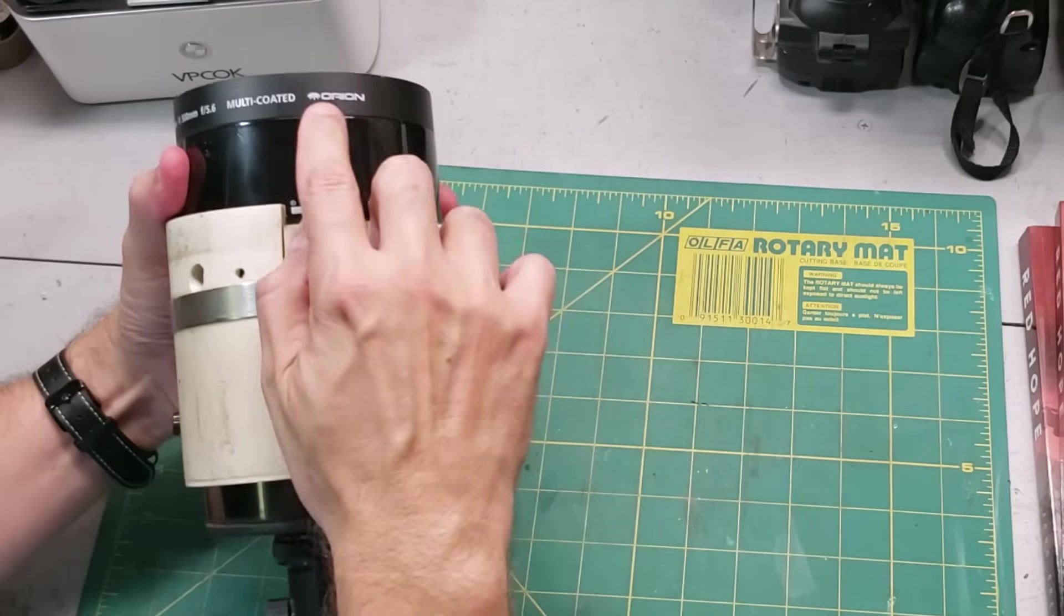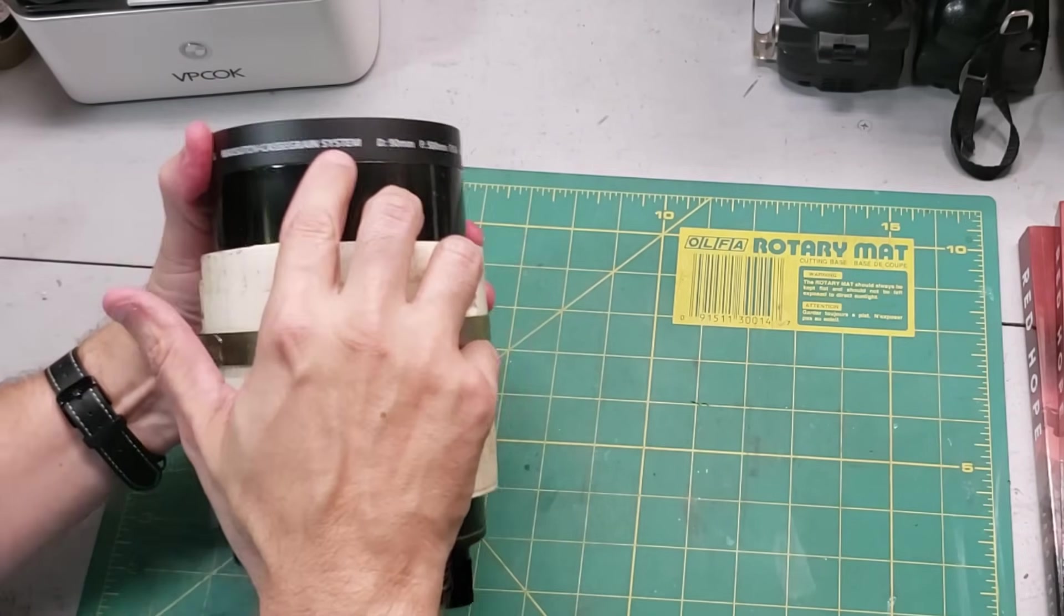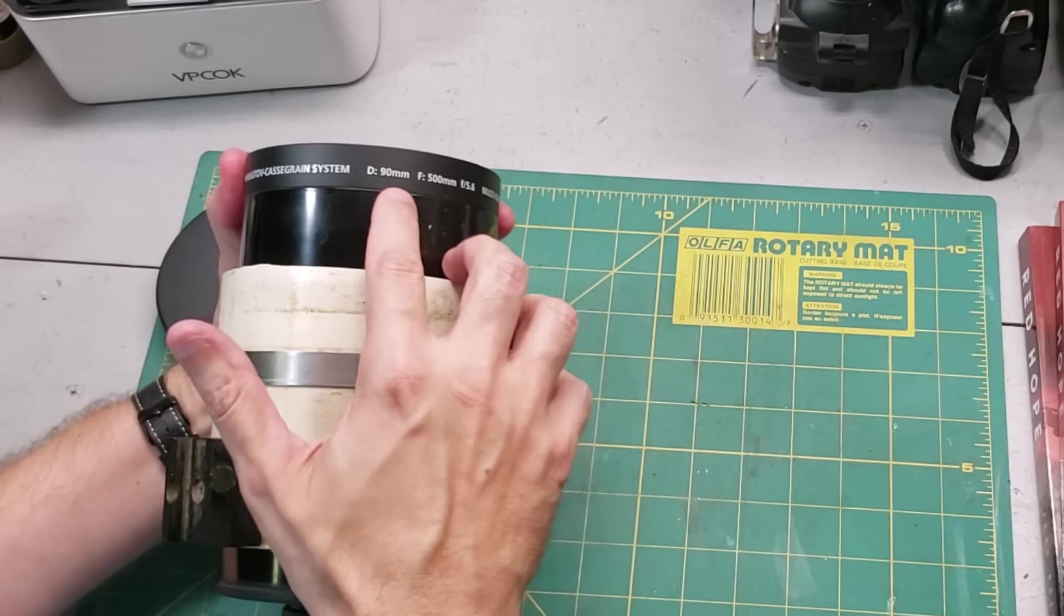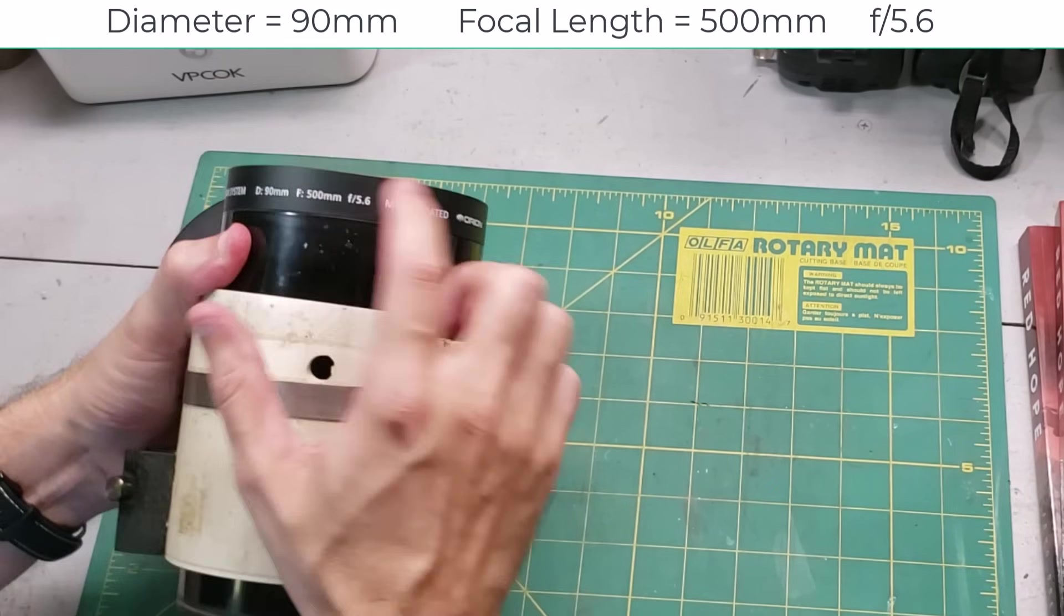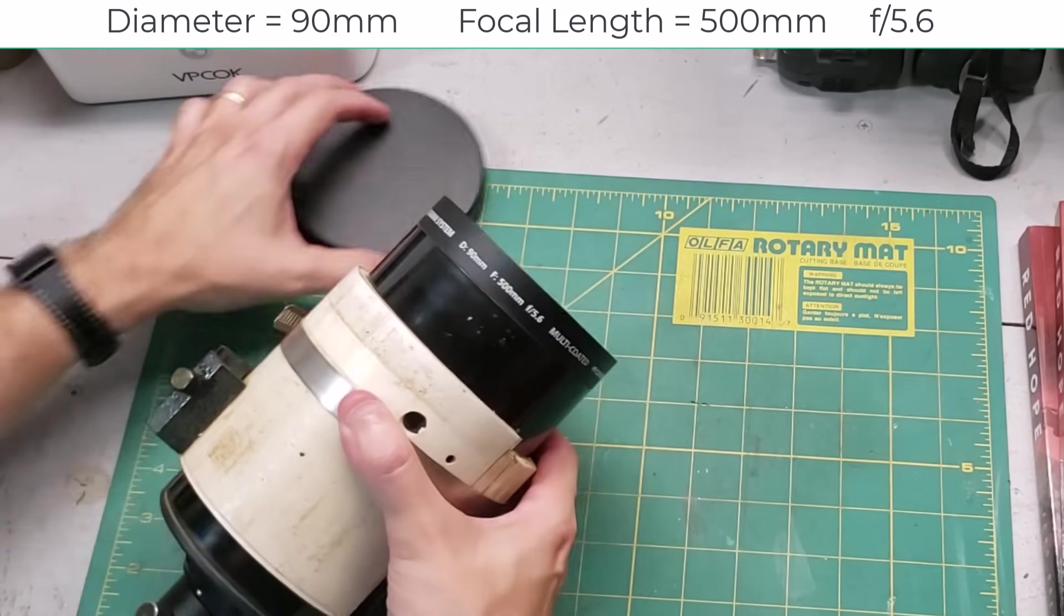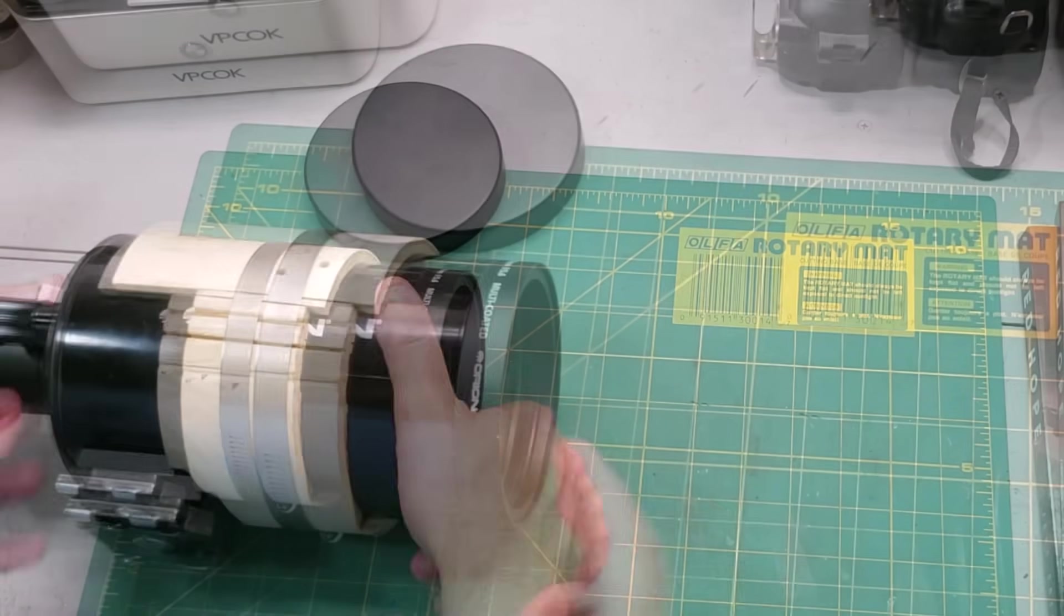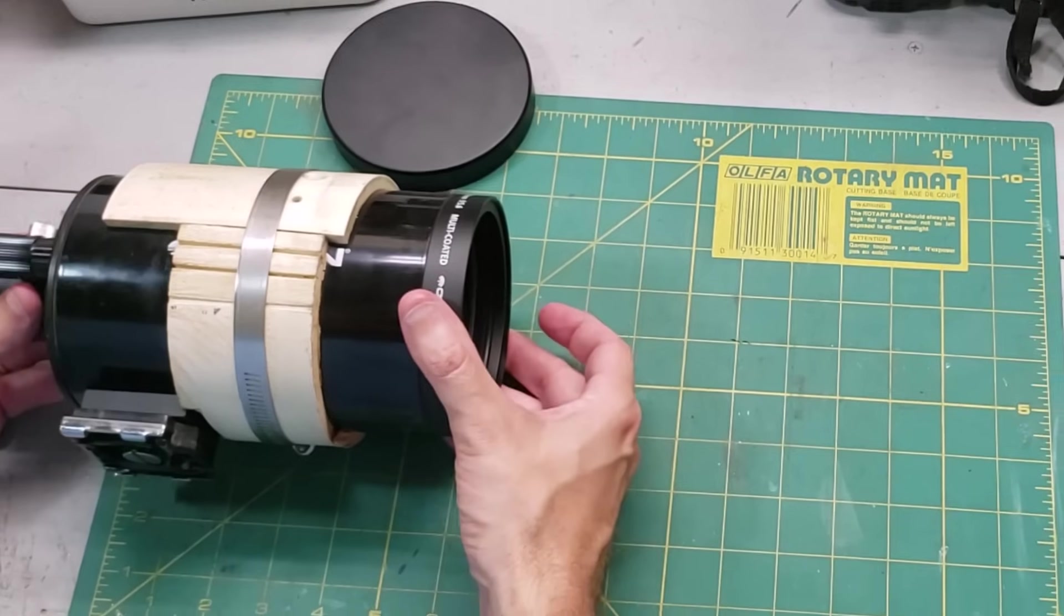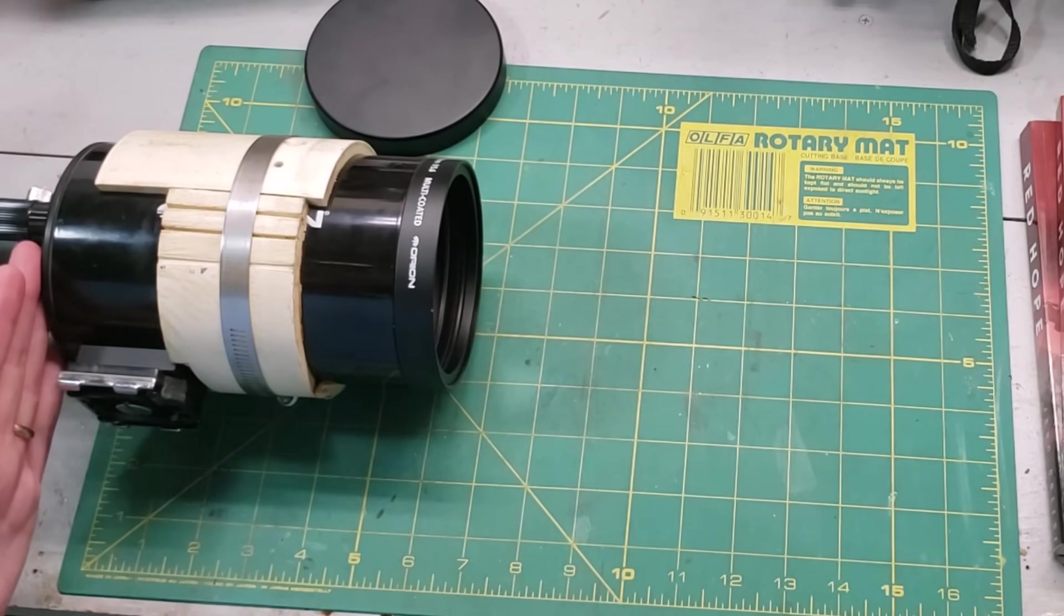We get that it says Orion, and it says here that it's actually a Maksutov-Cassegrain system, diameter of 90 millimeters (about 3.5 inches), and it has a focal length of about 500 millimeters. This is pretty amazing because the telescope is only about 7 inches long (165 millimeters), but the focal length is actually three times that.